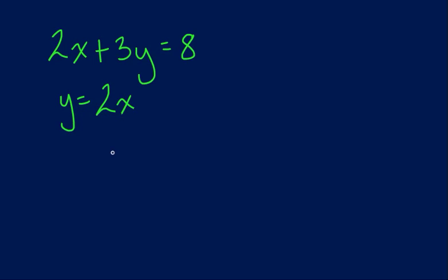When we get a substitution problem like this, it might seem a little confusing, but to be honest with you, this is probably one that's a little bit easier than most. And the reason why is because you already have a variable that's by itself. As you can see, the y here is by itself.